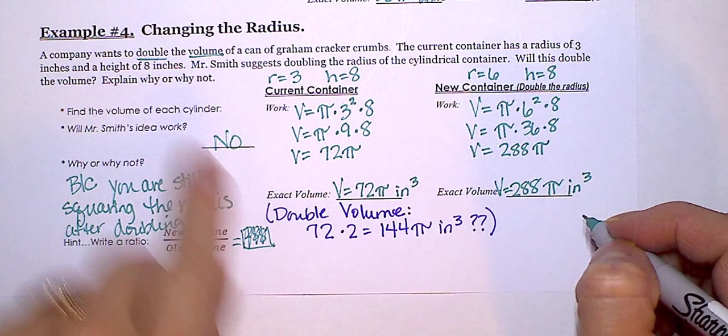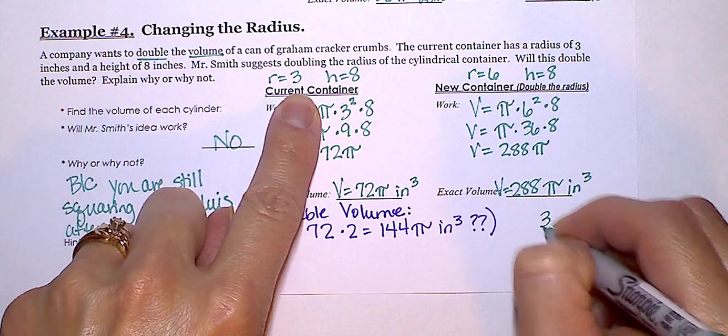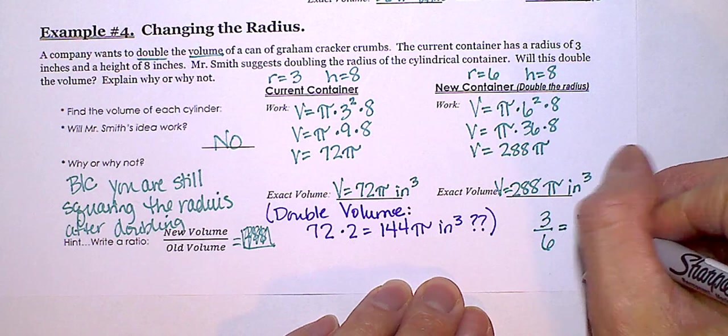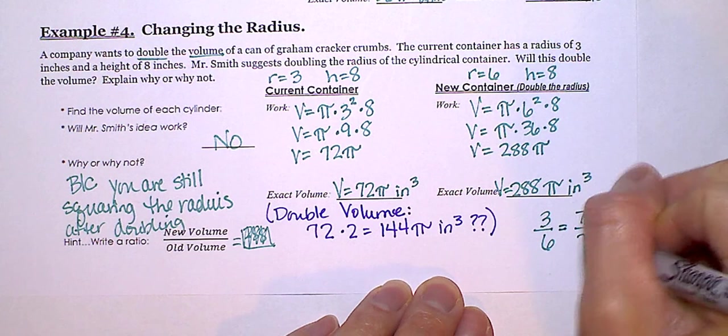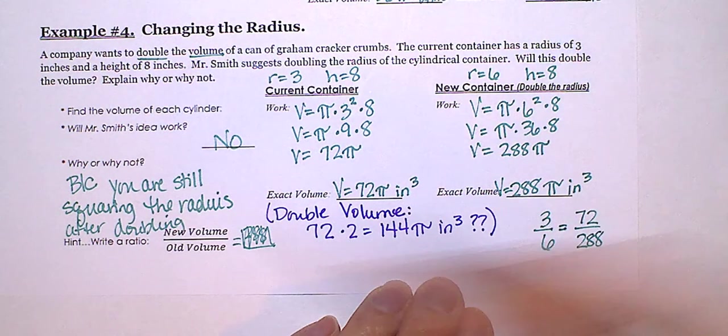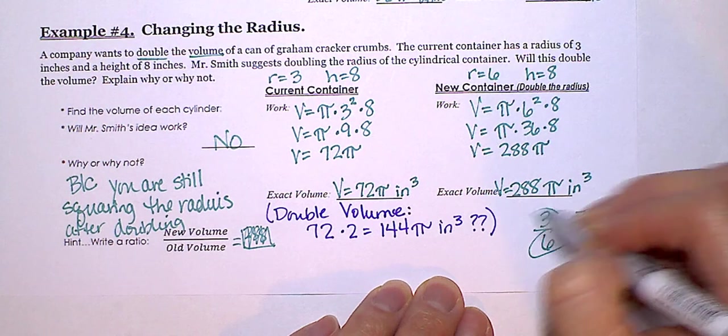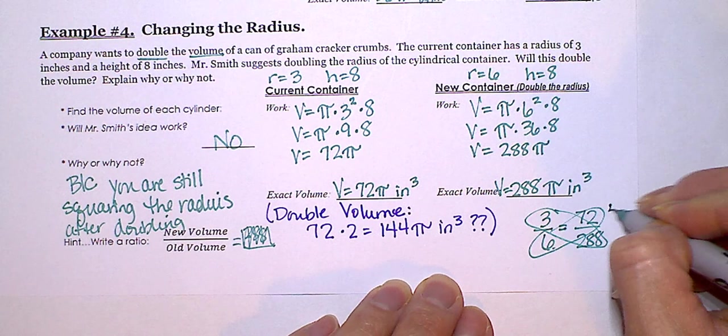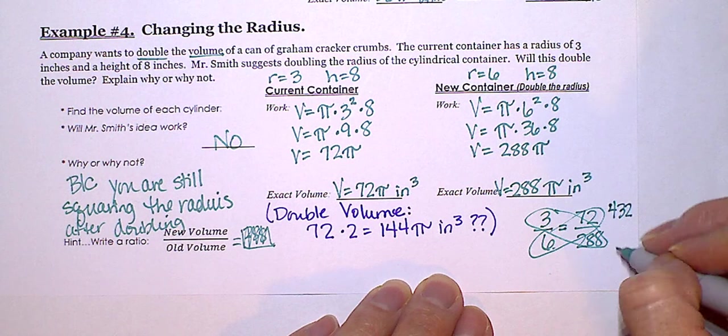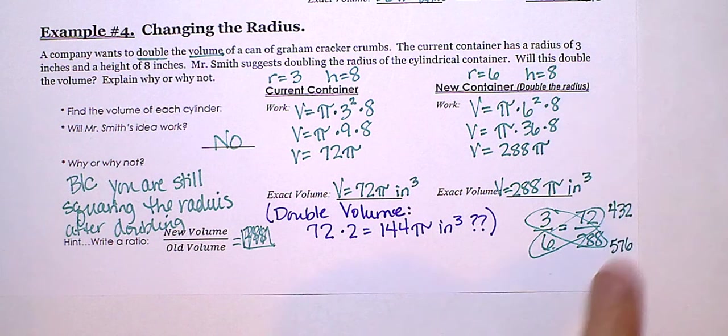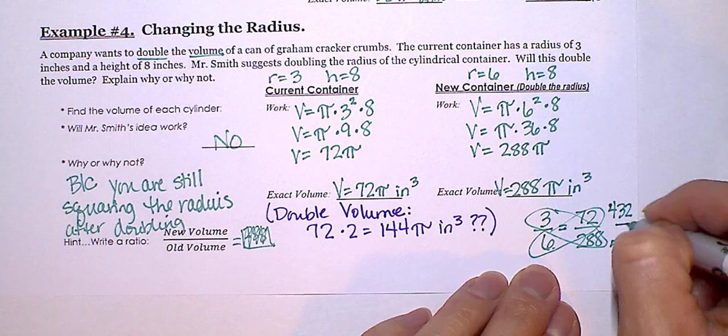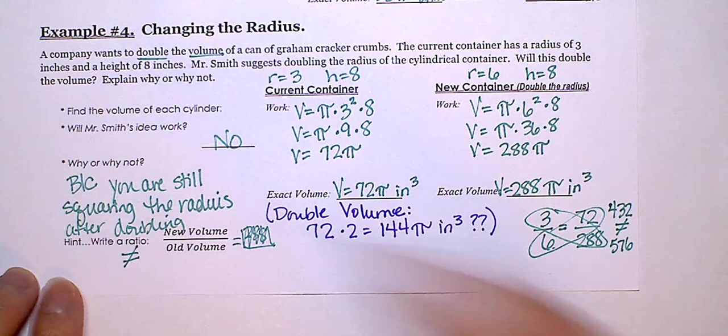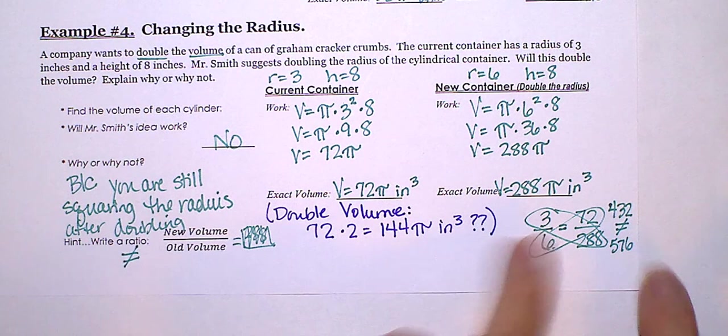So we had 3 to 6. We thought if we doubled this, then we would double this. And we want to see, does this ratio work? Well, when I plug these in, I get 6 times 72 is 432, but 3 times 288 is 576. So these are not equal ratios. So when they're not equal, we know that the volume did not double.